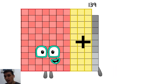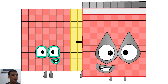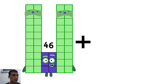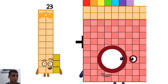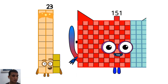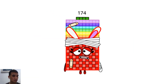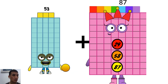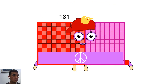139 plus 119 equals 258. 23 plus 151 equals 174. 53 plus 128 equals 181.